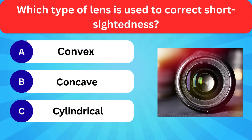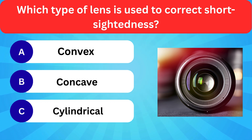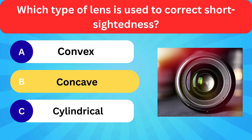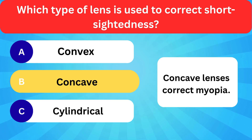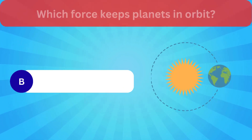Which type of lens is used to correct short-sightedness? Options: Convex, Concave, Cylindrical. Correct answer is concave. Concave lens corrects myopia.